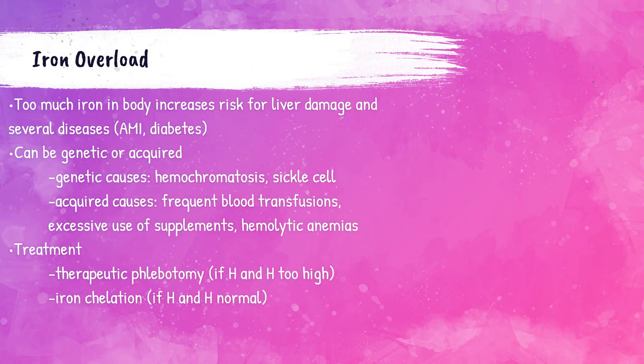Patients with too much iron run the risk of damage to their livers, as well as heart attacks and diabetes. Too much iron can be the result of a genetic cause, such as sickle cell disease and hemochromatosis. It can also be caused by too many blood transfusions and excessive use of iron supplements. There are two ways a patient with iron overload can be treated. If the hemoglobin and hematocrit are too elevated, therapeutic phlebotomy can be performed — a certain amount of blood is taken from the patient and discarded. If the patient has too much iron but a normal hemoglobin and hematocrit, an iron chelator can be given to reduce the amount of iron present within the blood.